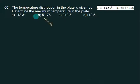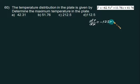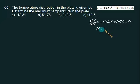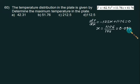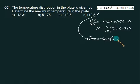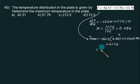For the last question, we are given a ready-made temperature distribution and need to find the maximum temperature in the plate. Since it is a downward parabola, this is a case of internal heat generation. We find the location of maximum temperature by setting dT/dx = 0: −125x + 11.76 = 0, giving x = 11.76/125 = 0.094 m. Substituting into the temperature distribution: T_max = −62.5×(0.094)² + 11.76×(0.094) + 41.76 = 42.31°C. Choice A is correct.